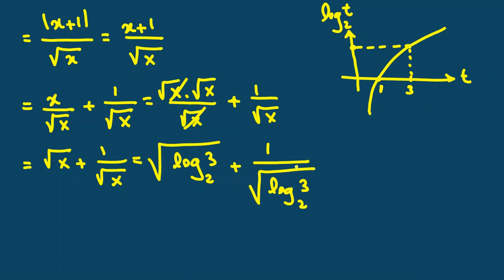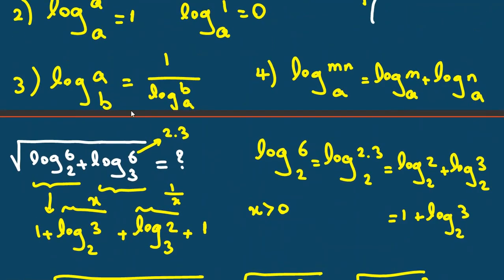We know we can write it as square root of log base 2 of 3 plus square root of 1 over log base 2 of 3. 1 over log base 2 of 3 is what? Here, I said if we switch A and B, it will be reciprocal.